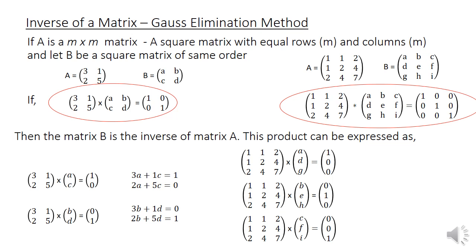Now let us present the Gauss elimination method to find the inverse of a matrix. If A is an M by M square matrix and B is its inverse, then A times B must equal the identity matrix. For example, consider the 2 by 2 matrix A with elements [3, 1; 2, 5]. We denote the unknown inverse as B with elements a, b, c, d. We need to determine these elements such that AB equals the identity matrix.